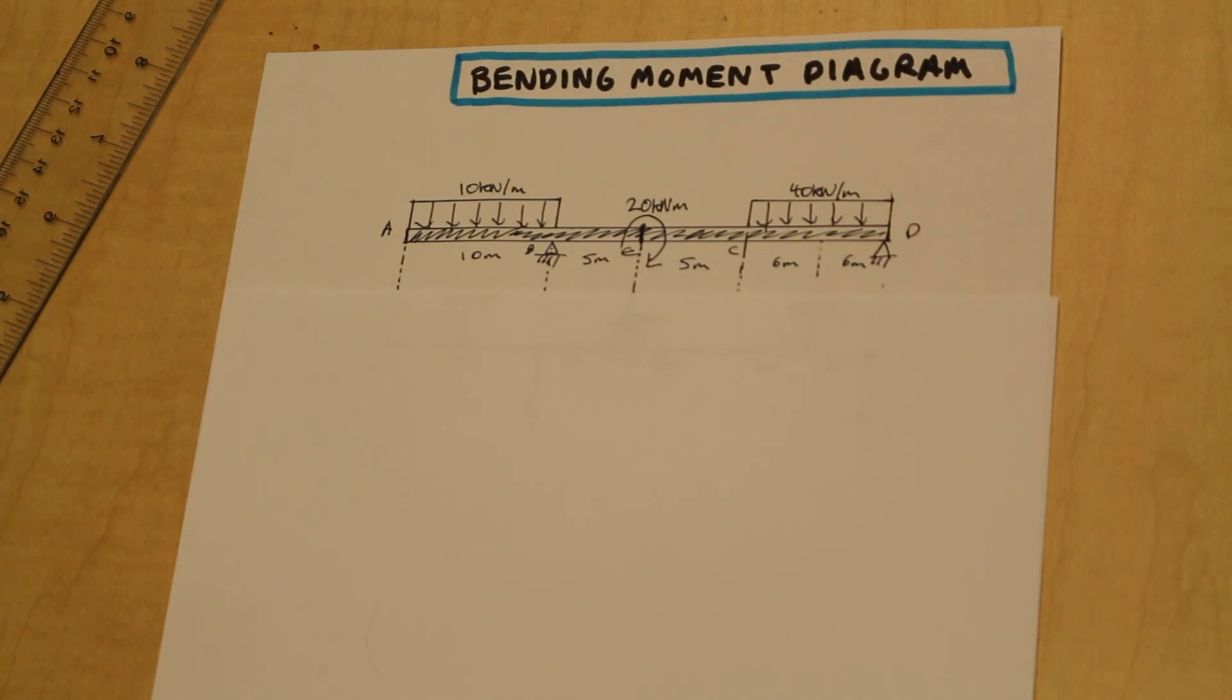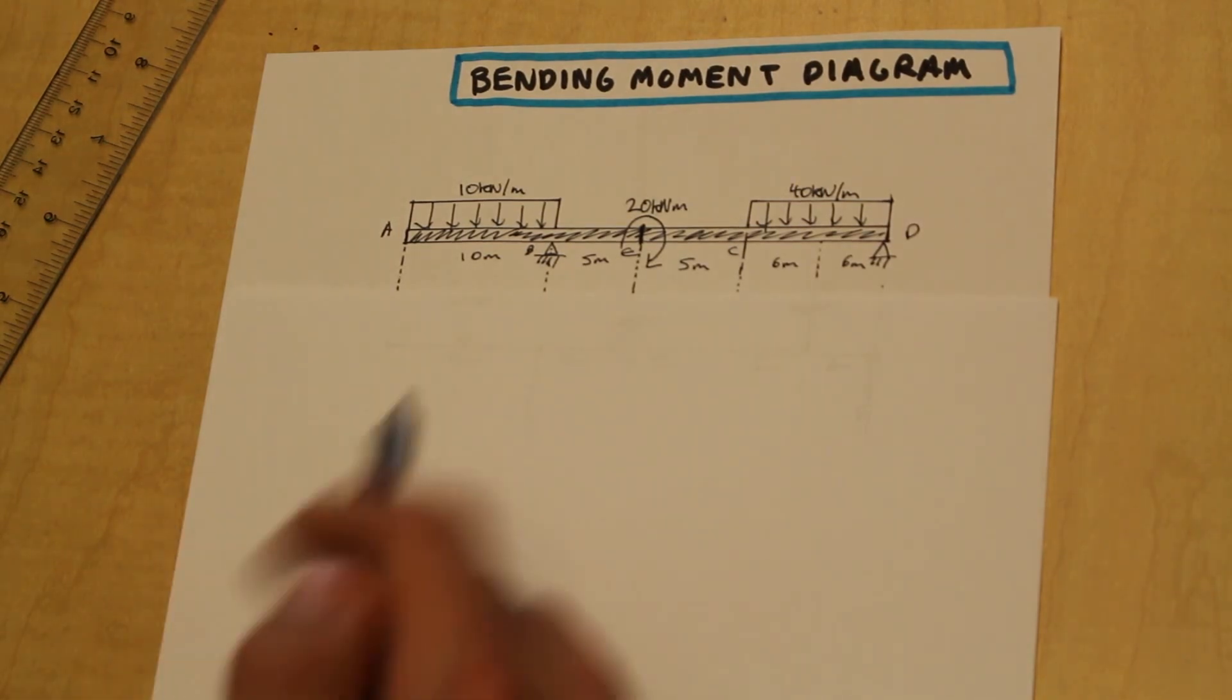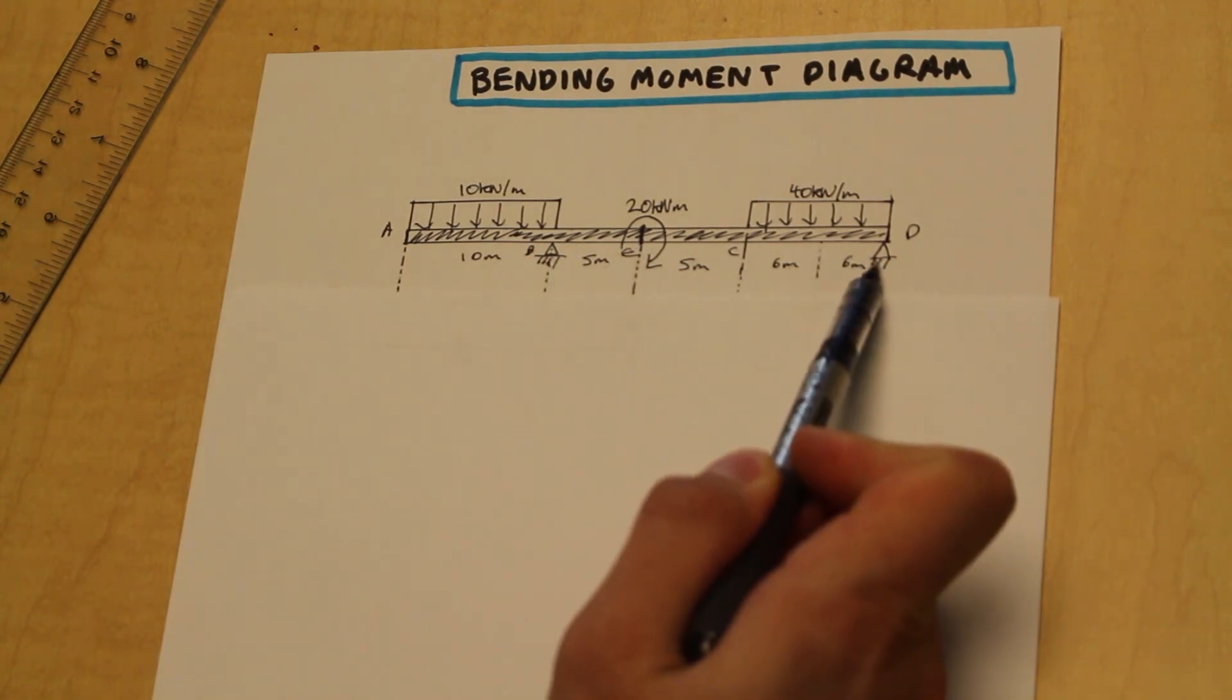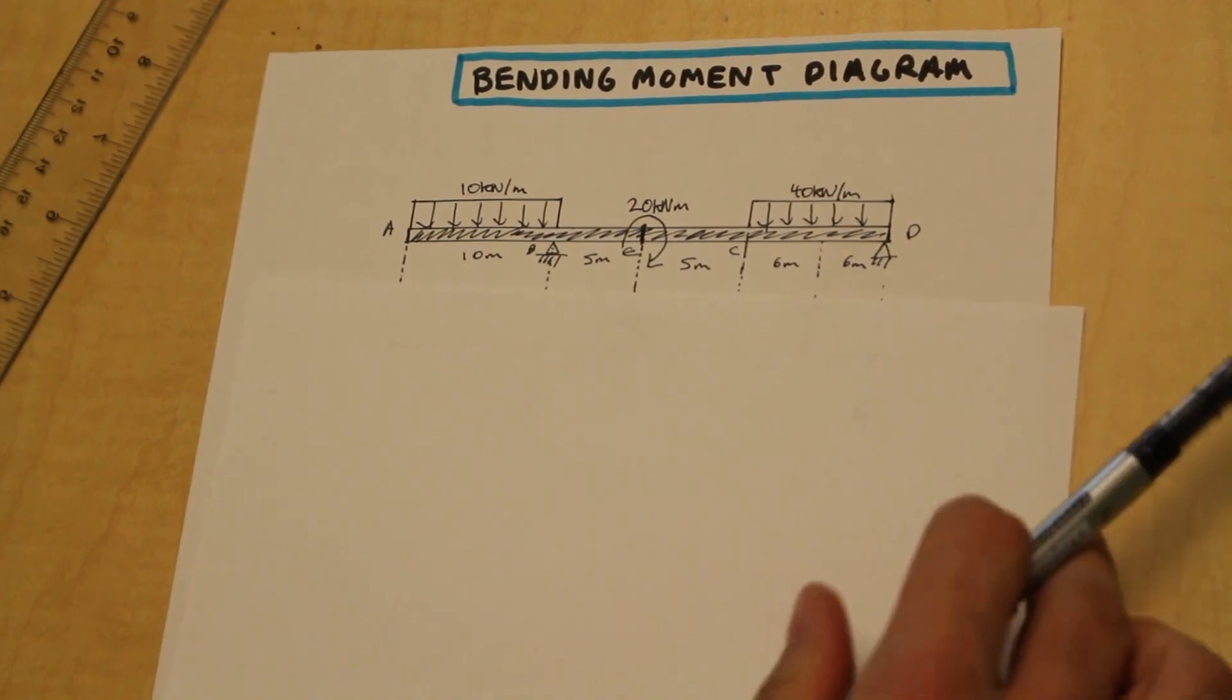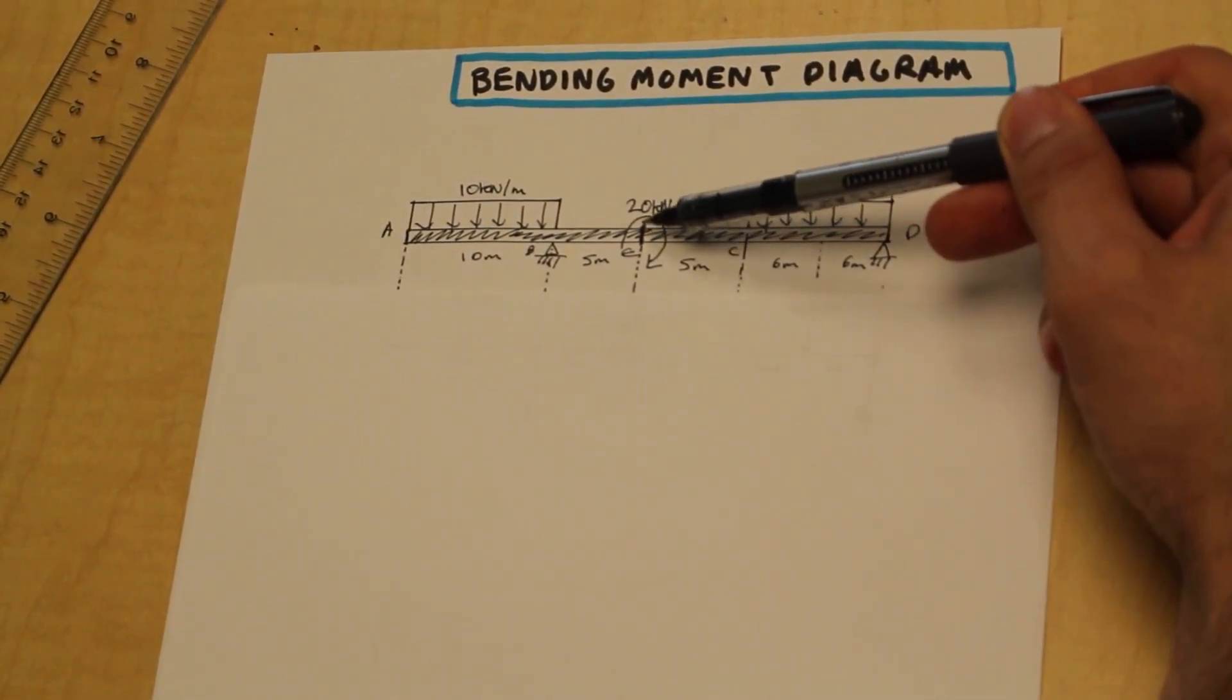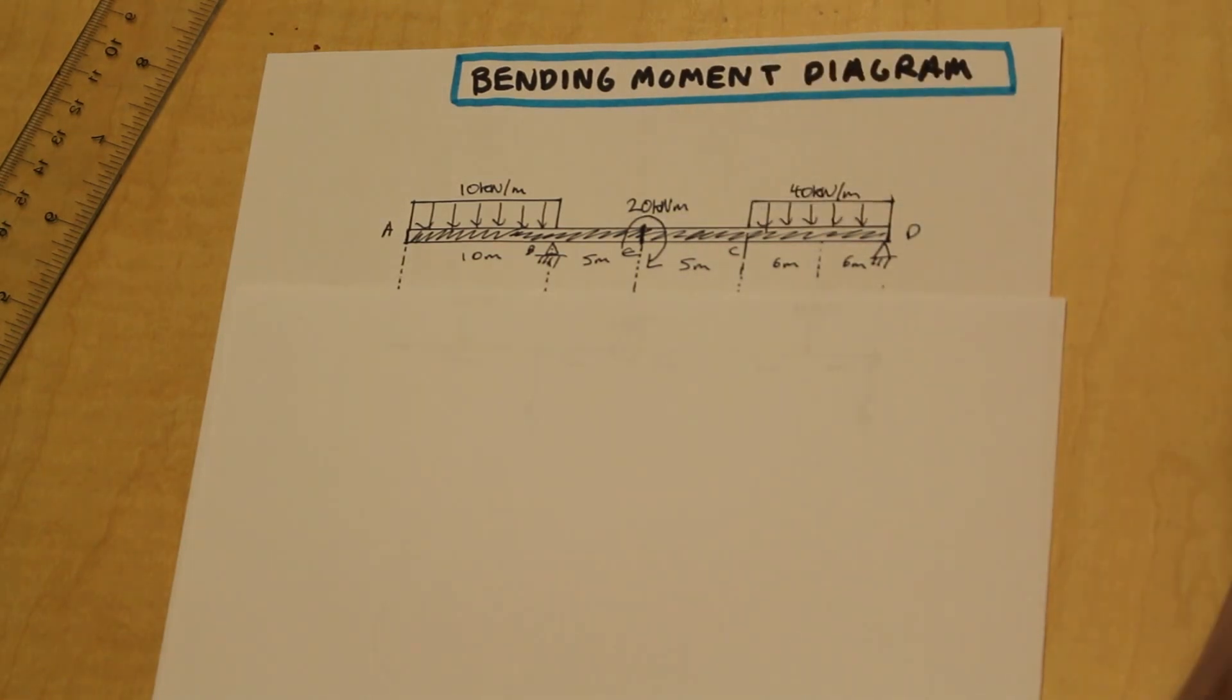Right here, we have a beam being subjected to different loads. We have two distributed loads: one of 10 kN per meter between A and B, and one 40 kN per meter between C and D. We have two supports in the question: a roller support at B and a pin support at D. We also have a free moment of 20 kN meters at point E.